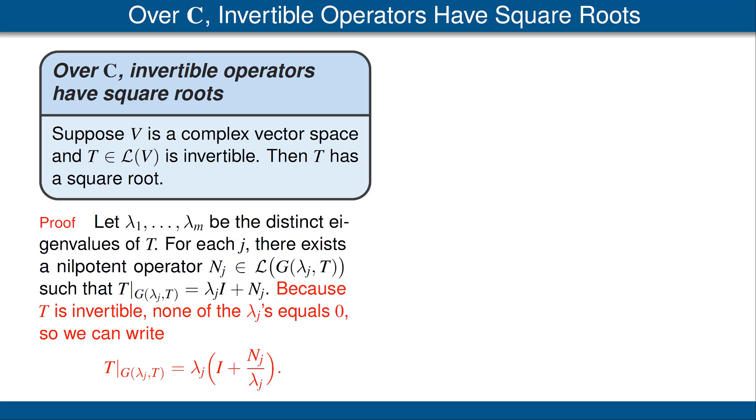Now, because T is invertible, that's our hypothesis, none of the λⱼ's equals zero. So we can rewrite this by factoring out the λⱼ, getting the equation shown in the last line.